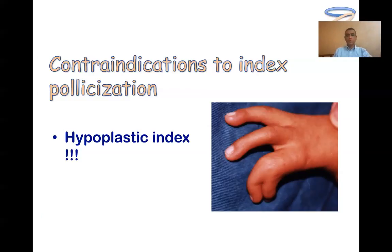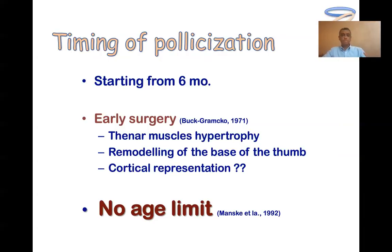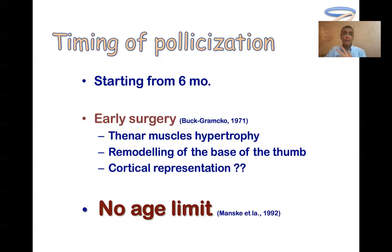Like any elective surgery in the pediatric age group, pollicization can be done starting from six months of age or six kilograms body weight, as this is a safe time for anesthesia. However, pollicization can be done at any age. There is some controversy about cortical representation, but if the thumb is not present, there is no cortical representation of the thumb — rather, there is cortical representation of the most radial finger like a thumb. After pollicization, the brain will move this finger accordingly, so there is no age limit for pollicization.